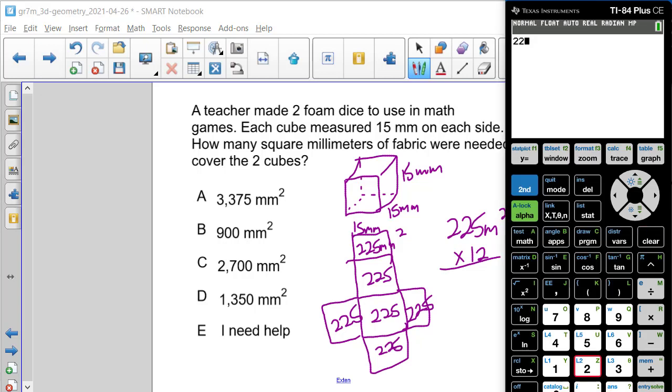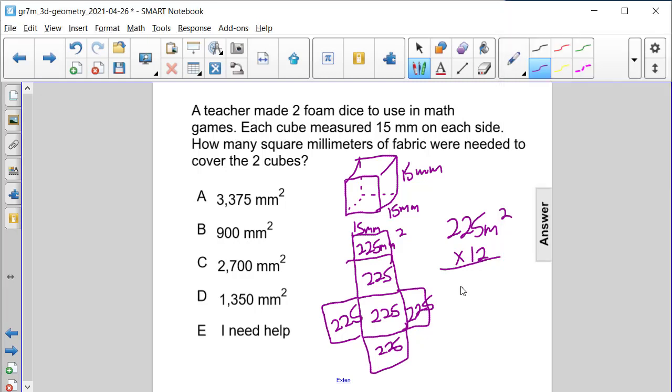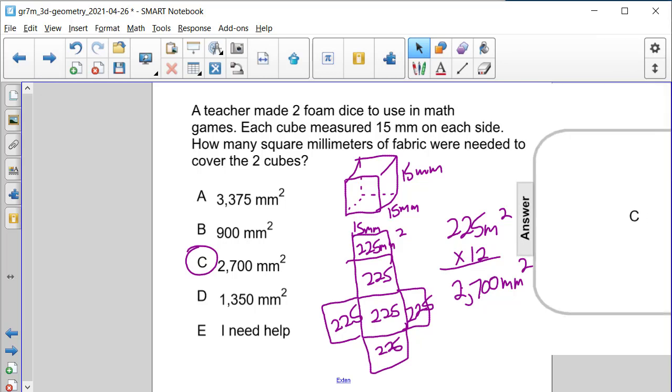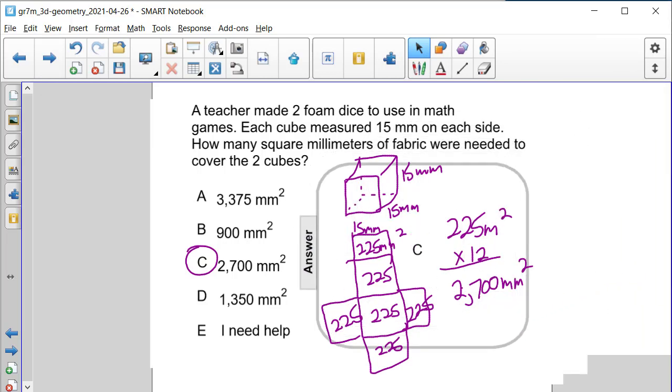So let's multiply these two values together, 225 times 12, and that's equal to 2,700 square millimeters of fabric are needed to make these two dice for answer choice C.